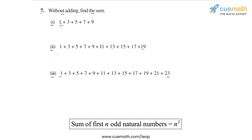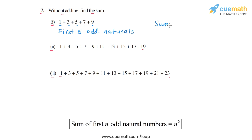In the first part, we have 1, 3, 5, 7, 9. This is the first 5 odd natural numbers, and hence the sum will be equal to n squared, where n is equal to 5. So the sum will be equal to 5 squared, or the sum will be equal to 25.